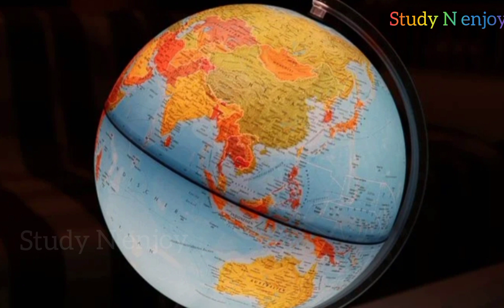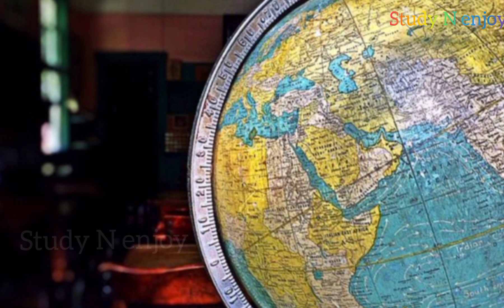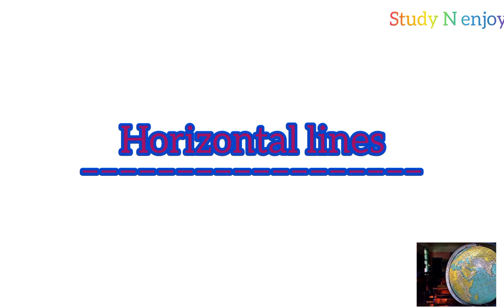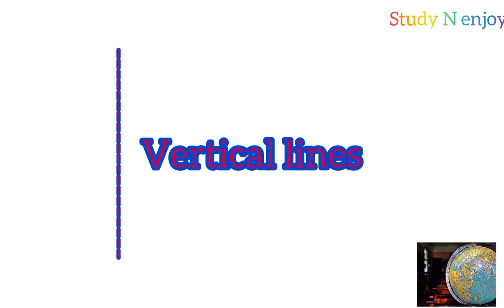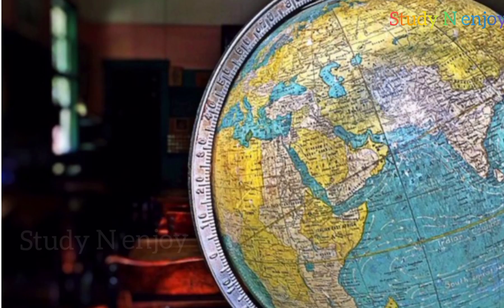We can see a lot of lines on these maps and globes. Have you ever seen these type of lines on the ground or soil? No, we can't see these lines on earth. But in globes and maps, we can see a lot of horizontal and vertical lines. A horizontal line means parallel or base lines. A vertical line means a steep, straight, or unsloped line. We can see a lot of these vertical and horizontal lines in globes and maps.